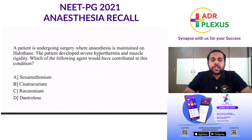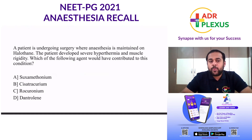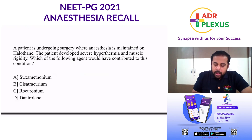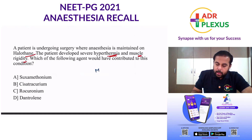Then the third question: a patient is undergoing surgery where anesthesia is maintained on halothane. The patient developed severe hyperthermia and muscle rigidity. Which of the following would have contributed to this condition? Here they are describing a patient already under halothane who develops hyperthermia and muscle rigidity — this indicates the characteristics of malignant hyperthermia.